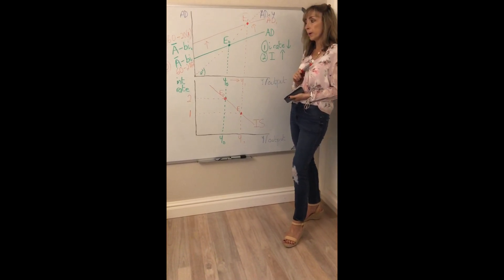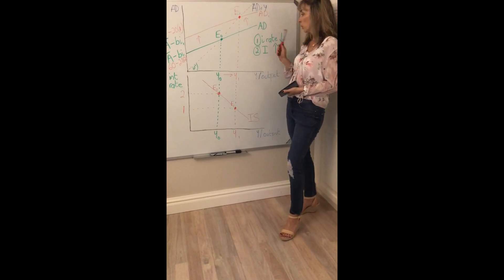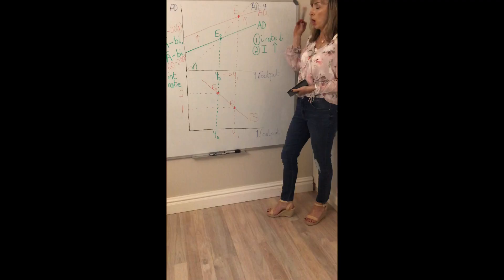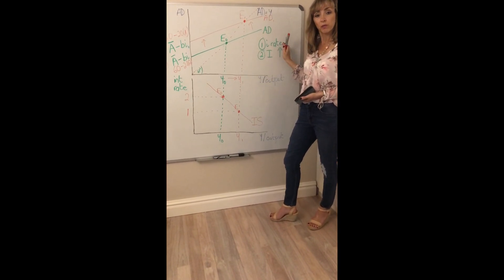So if you need to remember how to derive it, your starting point, a good place to start is to think, okay, start off drawing an aggregate demand curve and think, what happens when the interest rate falls?